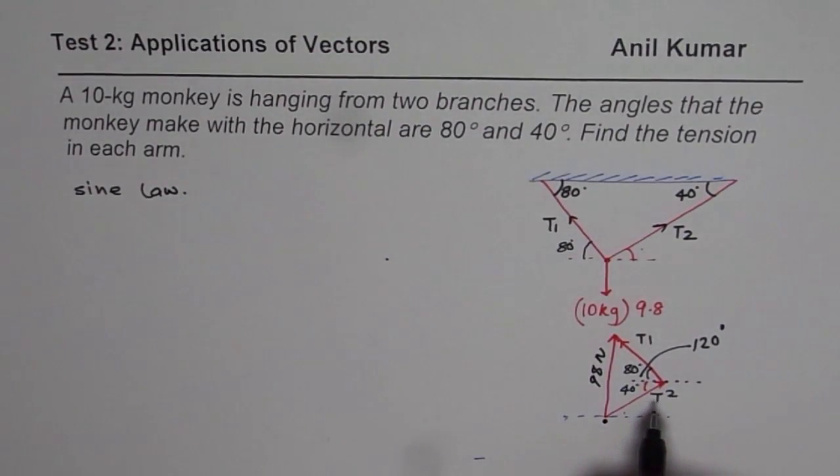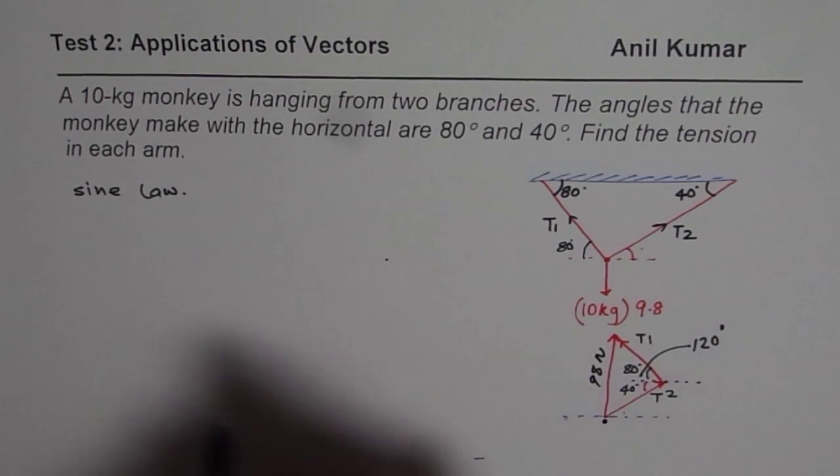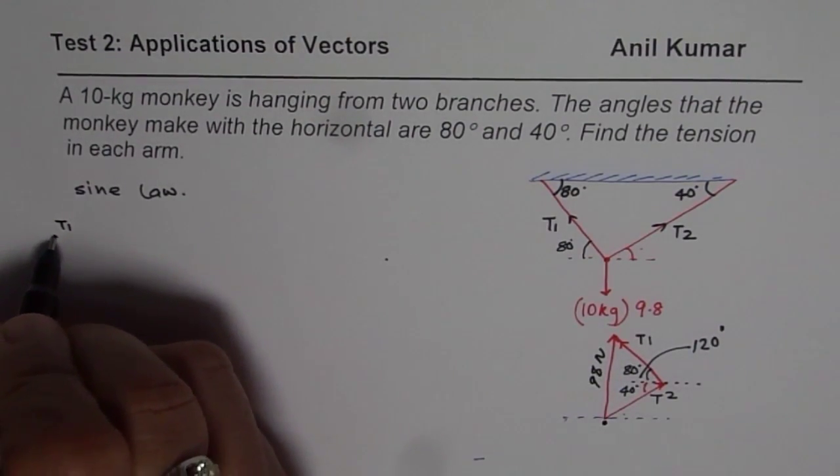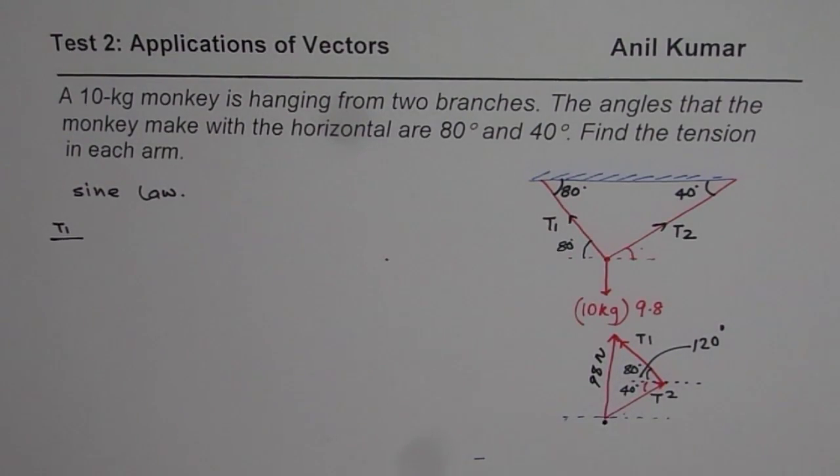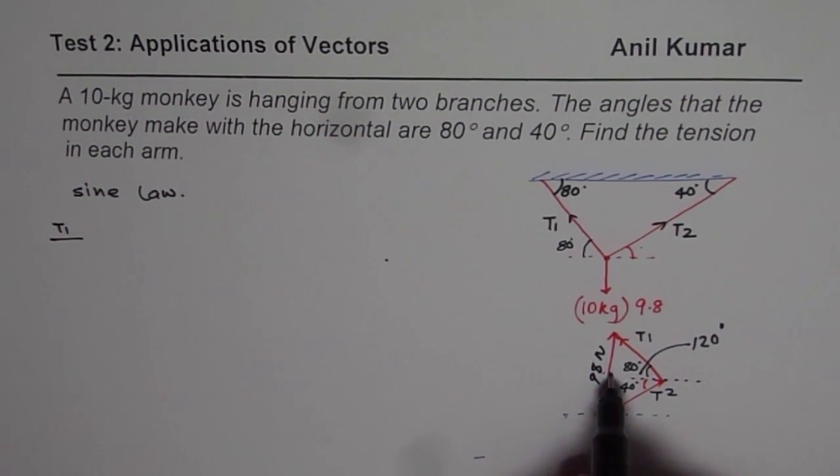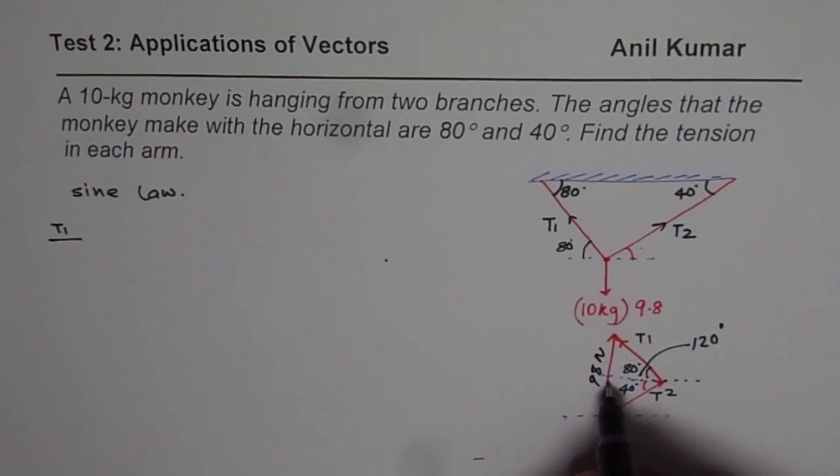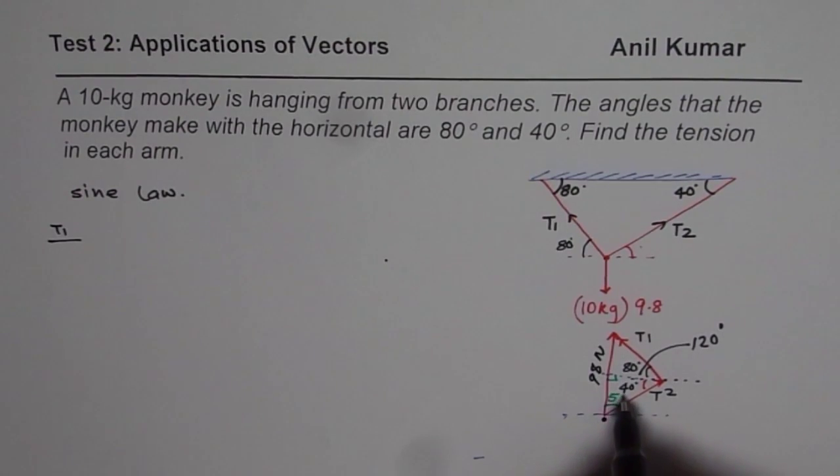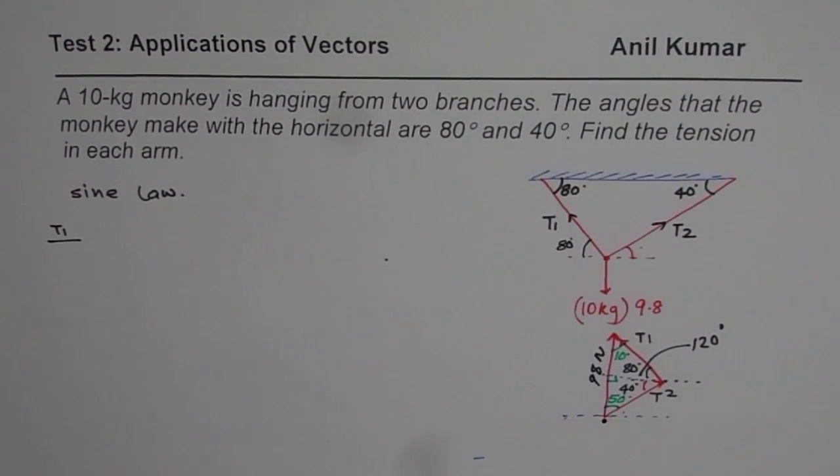We need to find T1, so we can say T1 over sine of the angle opposite to T1. So how do you find that angle? We could extend this line, that makes 90 degrees here. Now this is 90 degrees, then 40 is one angle, 90 is the other angle. So this angle is 50 degrees for us, and that angle will be 10 degrees.